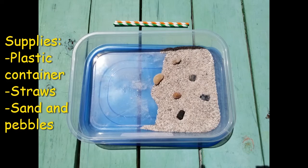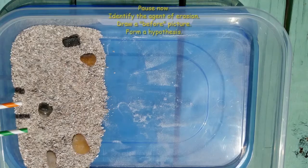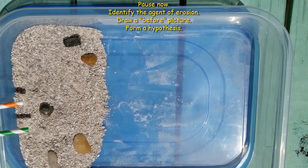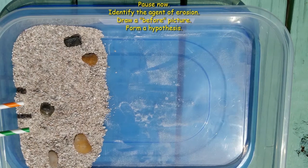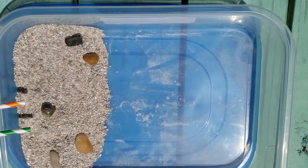Let's get started on our activity. For our model, we're going to use a plastic container, a couple of straws, and some sand and pebbles. My daughter Parker is going to assist me today by blowing through the straws to simulate wind. Now it's time to pause the video to complete the first three parts of the worksheet. Identify the agent of erosion, draw a before picture of the landscape, and form a hypothesis. What do you think is going to happen when we run the model?